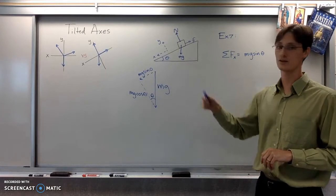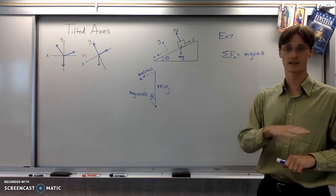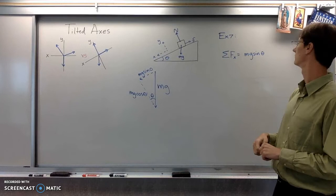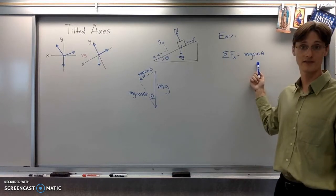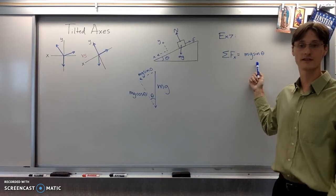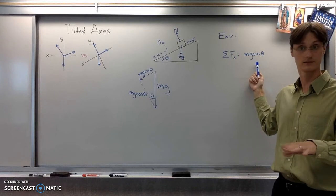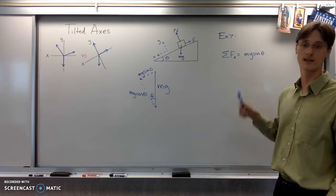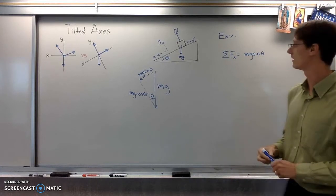Imagine that the angle is zero degrees. That's a flat surface. Well, the component of gravity along a flat horizontal surface is nothing, zero. And sine of zero is zero. So that would give us the correct result.